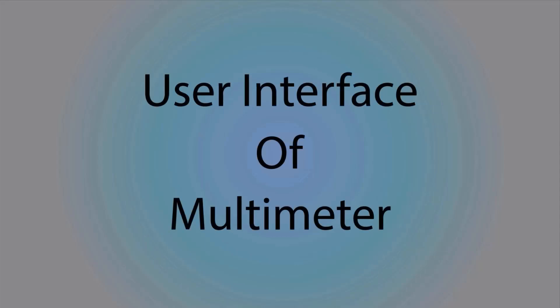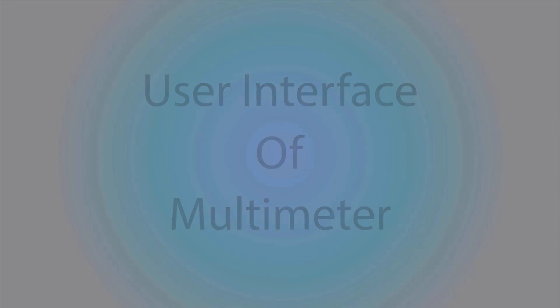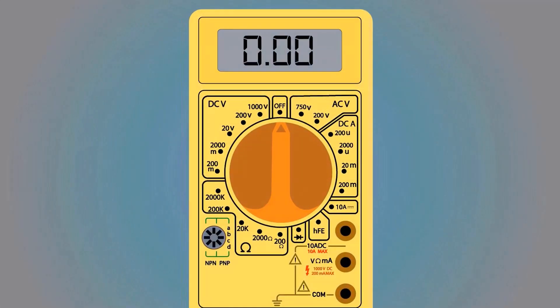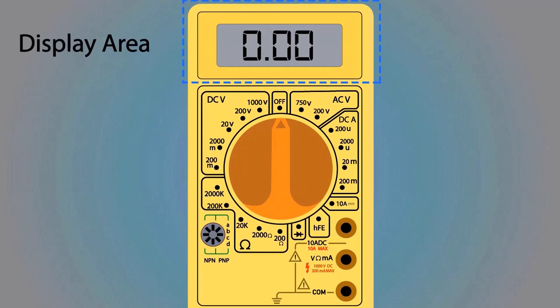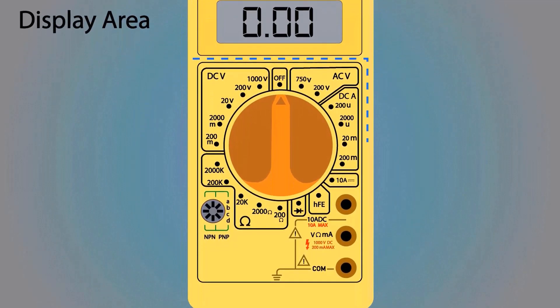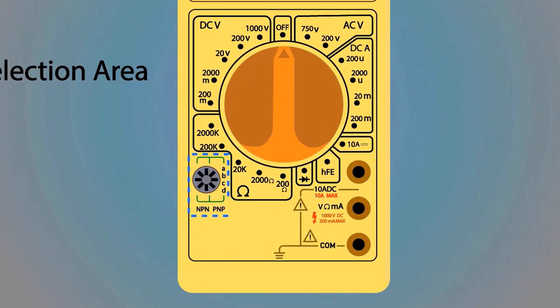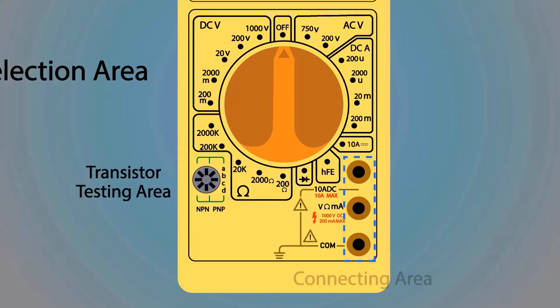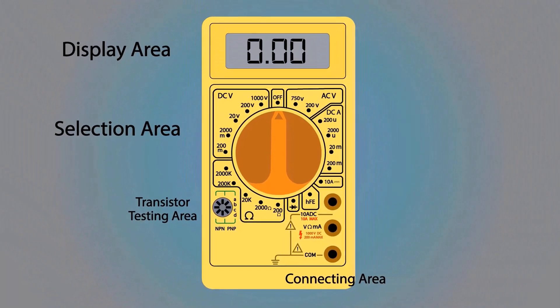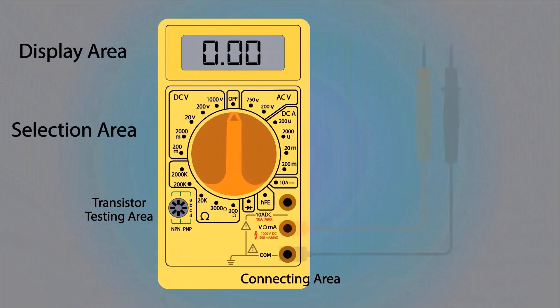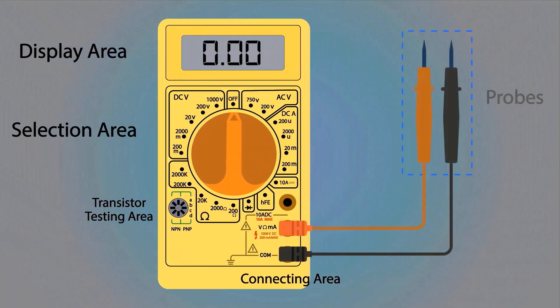Firstly, we will discuss the user interface of the multimeter. This is the display area. This is the selection area. This is the transistor testing area. This is the connecting area. These are the positive and negative probes.